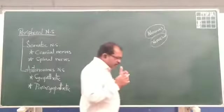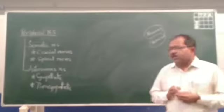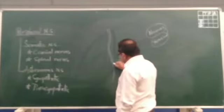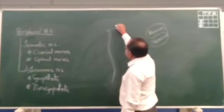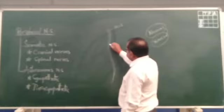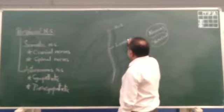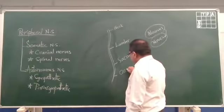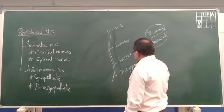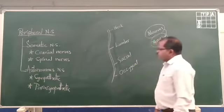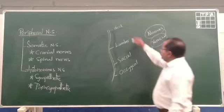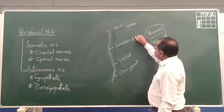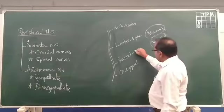The next one is spinal nerves. There are 31 pairs of spinal nerves. The spinal cord has different regions: the neck region, lumbar region, and sacral region. In the neck region, 8 pairs of spinal nerves are present. The lumbar region has 5 pairs. The sacral region has 5 pairs.